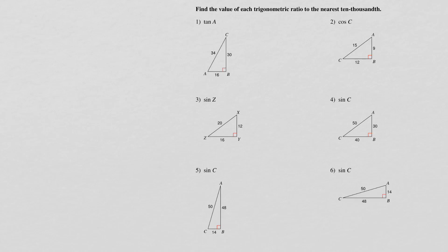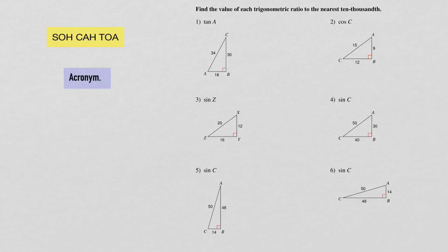Trigonometric ratios — what you need to know is this phrase: SOHCAHTOA. That's your sine, your cosine, and your tangent. An easy way to remember this is with the use of acronyms. Here's an acronym I like to use: "Some old hippie came hopping through our apartment."